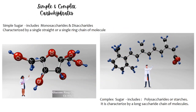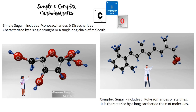Carbohydrates come in two main forms: the simple and the complex carbohydrates. They are classified according to size and solubility. Carbohydrates is made up of carbon, hydrogen, and oxygen. Simple sugar includes monosaccharides and disaccharides, which are characterized by a single straight or single ring chain of a molecule.